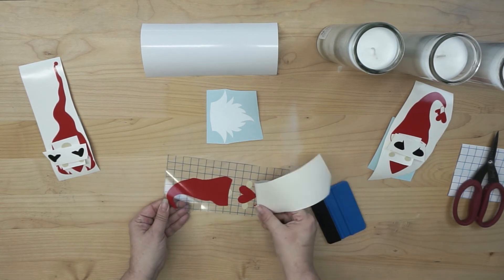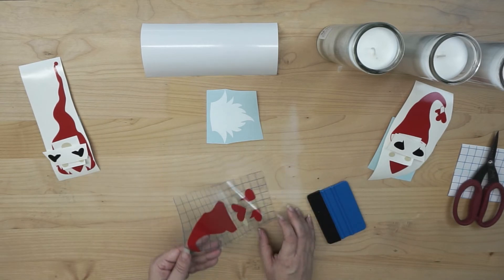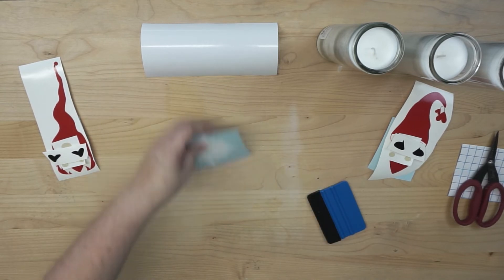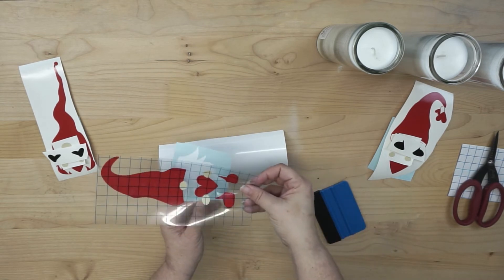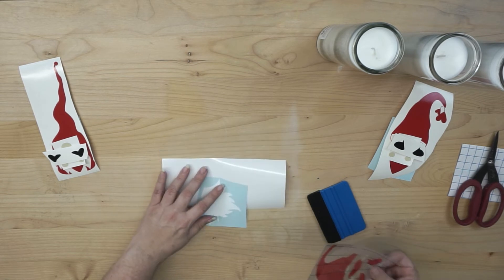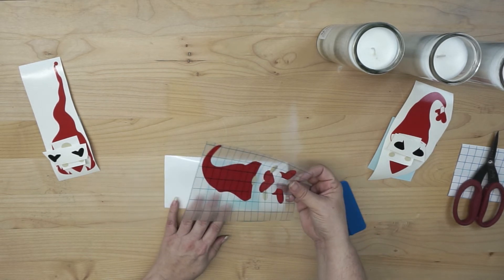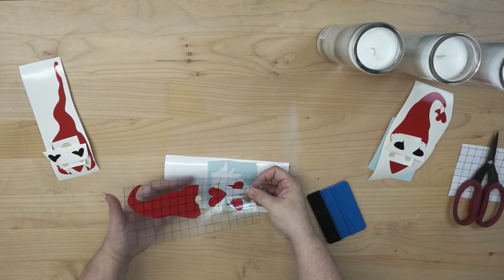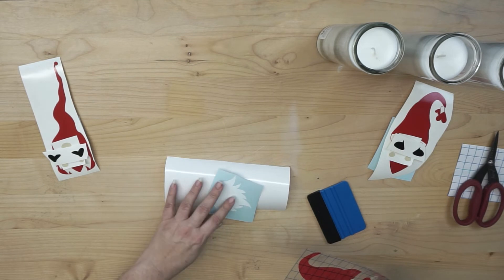Now if you ever have any problems getting your vinyl lifted from the backing, sometimes it helps to turn it over. Alright, now let's take a look at this too, because I don't want... See how small this is in comparison? I don't want to stick my vinyl to something else. So, I can leave this here. That way when my vinyl touches down, it touches the back of my transfer tape. Does that make sense?